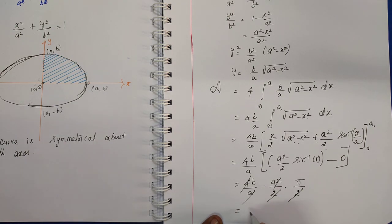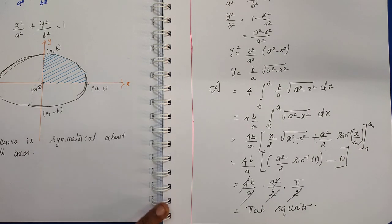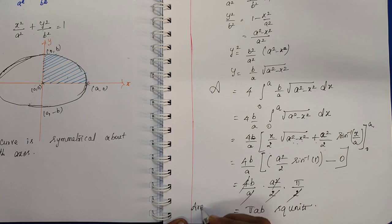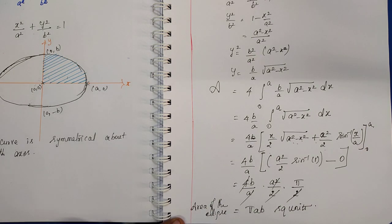The remaining result is πab square units. Therefore, the area of the ellipse is equal to πab square units.